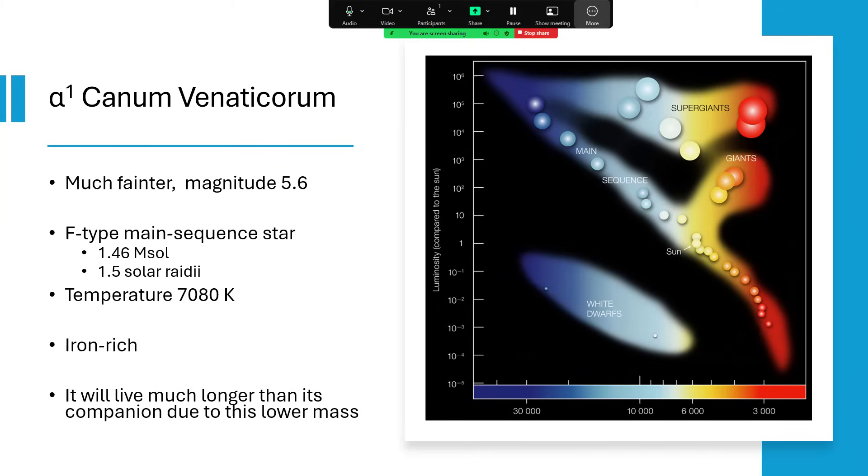The other star, Alpha 1, is much fainter. It's a cooler star, F-type, magnitude 5.6, so would be visible to the naked eye just in a clear location except for the fact it's got that very bright companion right next to it. F-type, a little bit more massive, 1.46 solar masses and one and a half times the radius, and a little hotter than the Sun at 7,080 degrees Kelvin, in that yellowy-white region of the F-type stars. As such, it will live a lot longer than its component, Alpha 2. Being smaller, it's probably got a life in the billions of years. There's a peculiarity to it which seems to be very iron-rich, rather strange for an F-type star.